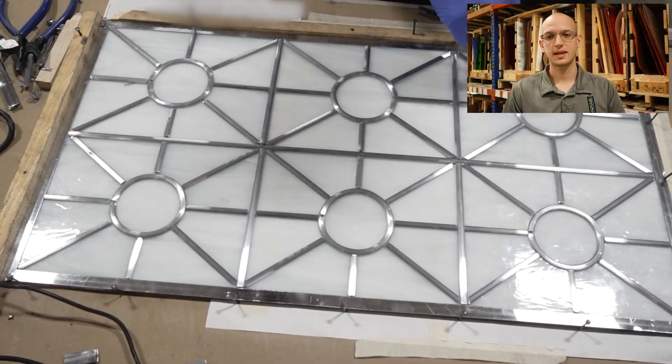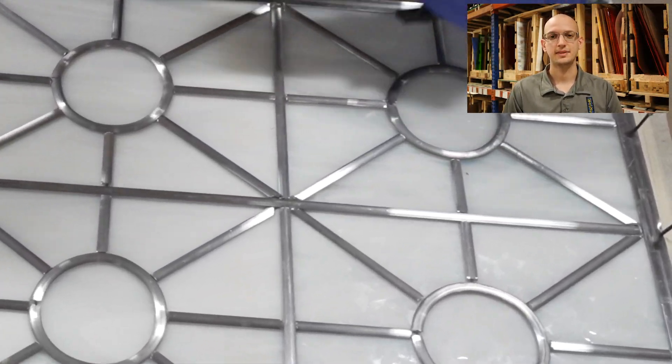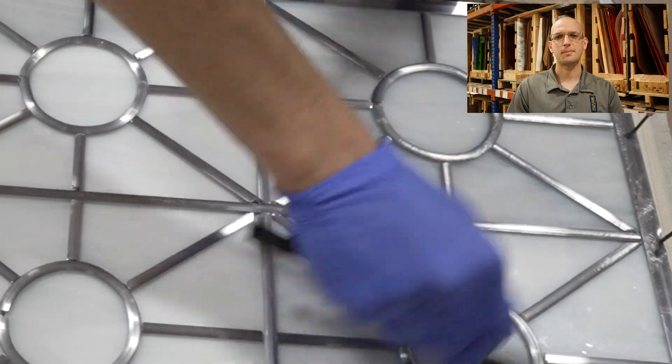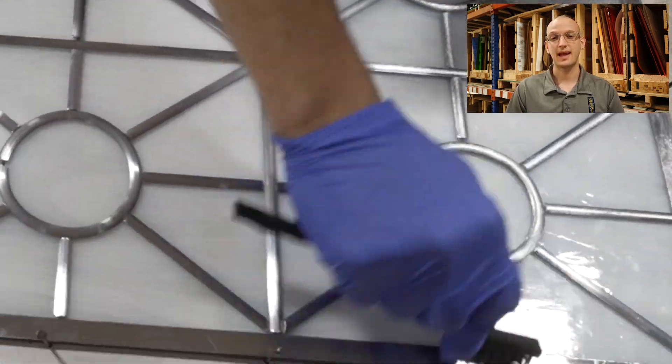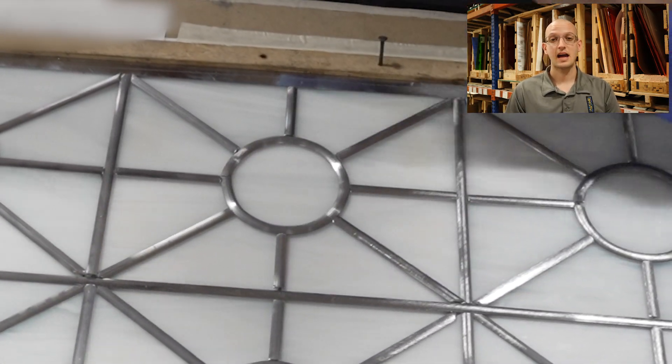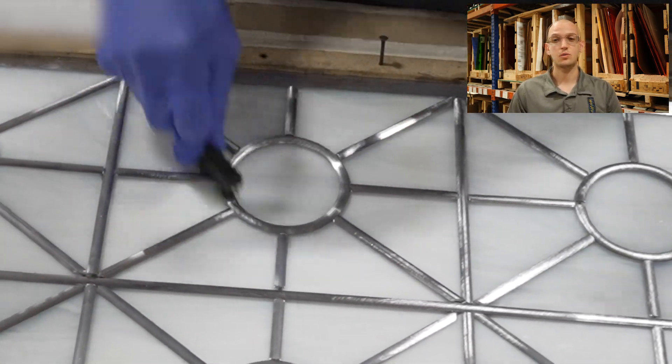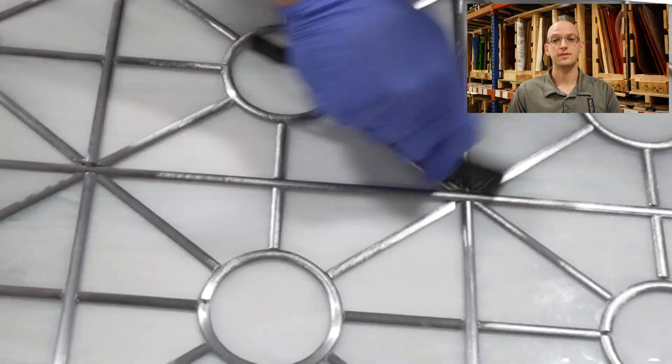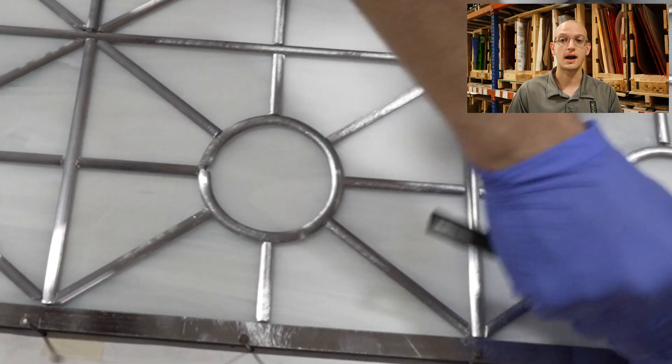With the lead assembly complete, it is solder time. This is a pretty satisfying part of the project because now the panel is actually holding together, even after only the first side is soldered. After we finish wire brushing all the joints, we will apply our flux and we are using 50-50 solder and a Weller soldering iron.